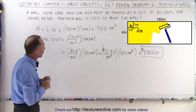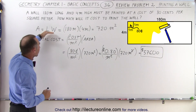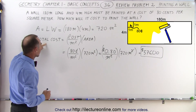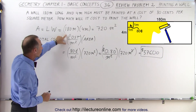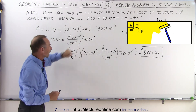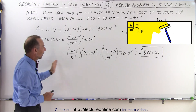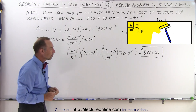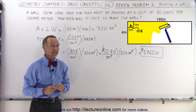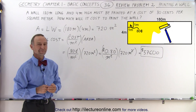So first, we find the total area, which is length times width. Then we find the total cost, which is the cost per square meter multiplied times the total area in square meters, and that gives us the cost in dollars. And that's how it's done.